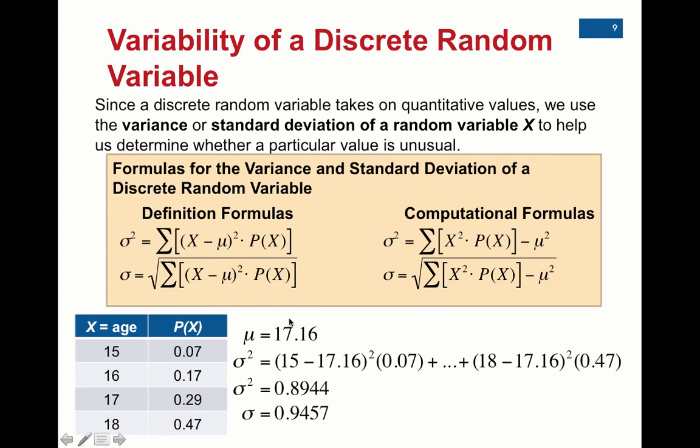So it's going to show this. Remember, the mean is 17.16. So to do the variance first, you take 15 minus the mean, which is 17.16, square it, and then multiply it by its probability. They do that for each data value. They're not showing the 16 and the 17. And then they get to the 18. 18 minus the mean squared times its probability of 0.47.